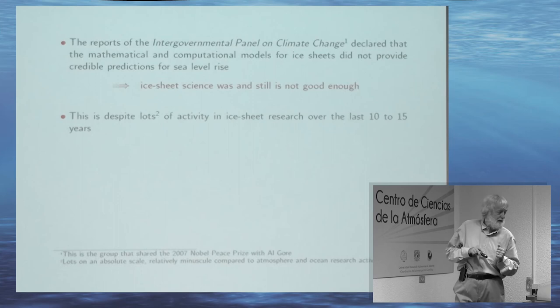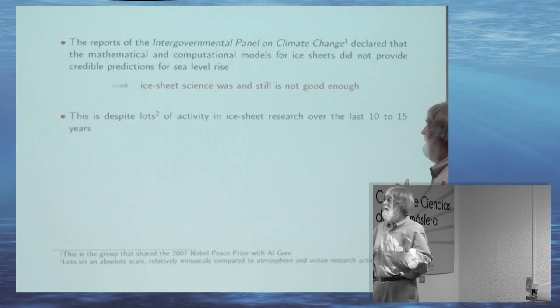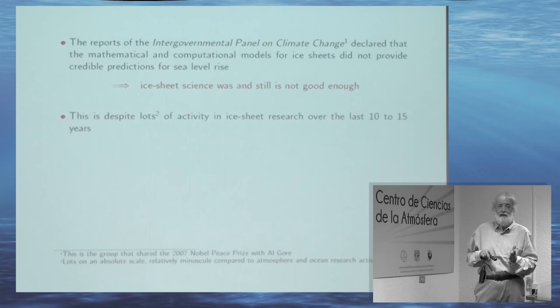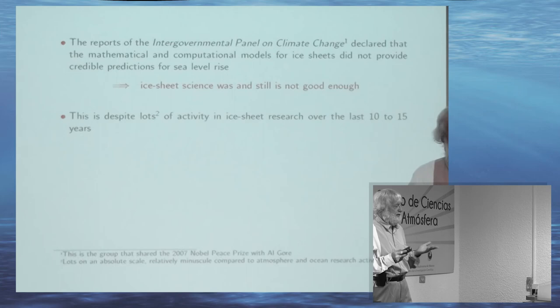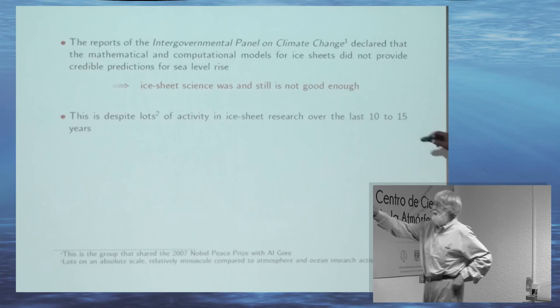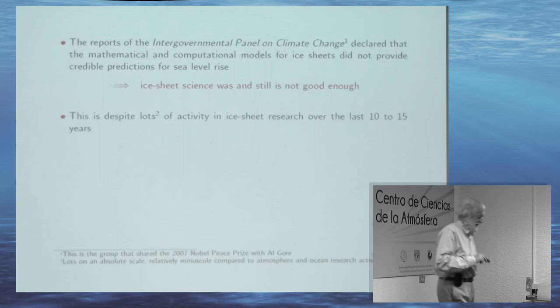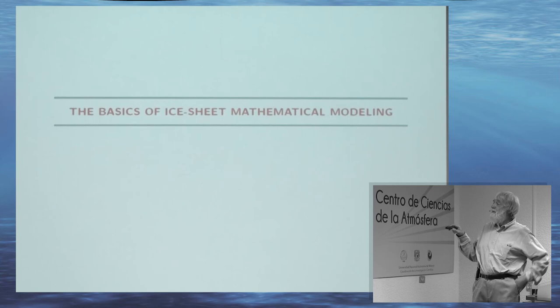Every seven years there's a panel that puts out a report about the state of the art of climate modeling. Every report that's ever been put out, including the last one, says probably the weakest link in climate modeling is ice sheets. There's been a lot of activity in ice sheets, but very little compared to what there is for atmosphere, ocean, or even sea ice.